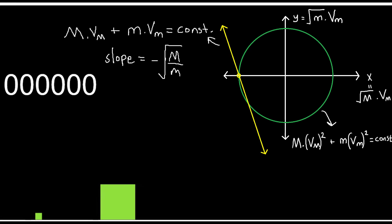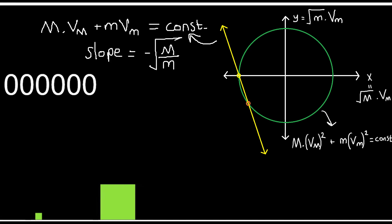This has a slope of negative square root of M divided by the square root of m. Then we find the intersection point of our graphs for the positions after the collision.